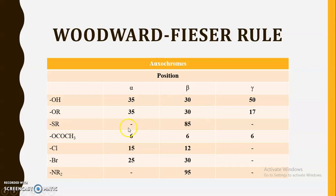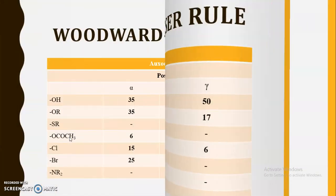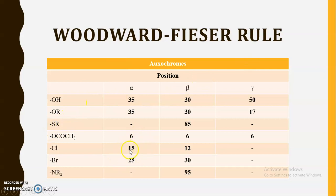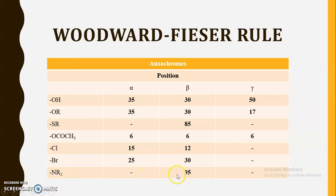The OCOCH3 group, whether present at the alpha, beta, or gamma position, has the same increment of 6 nanometers. For Cl, add 15 at the alpha position and 12 at the beta position, with no effect at gamma. Note that in case of dynes and trines, Cl and Br have the same effect, but here for alpha, beta unsaturated compounds they are different. For Br, add 25 at the alpha position and 30 at the beta position, with no effect at gamma. If an NR2 amino group is present, it only has an effect if present at the beta position. Please note down these values as they are required for calculation of lambda max.